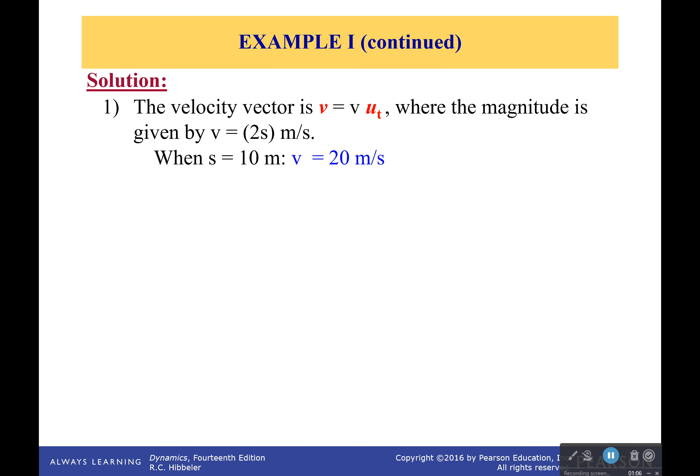So first off, the velocity vector in the tangential direction, because the car's velocity is always tangent to its path, is given by v equals 2s. So we're going to plug in s equals 10. We get the velocity at that particular point is 20 meters per second.